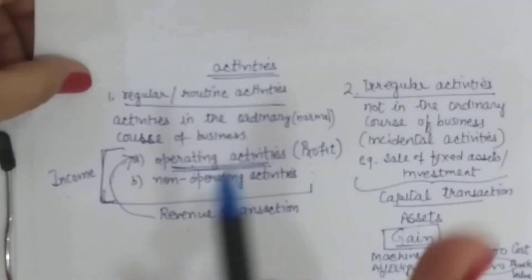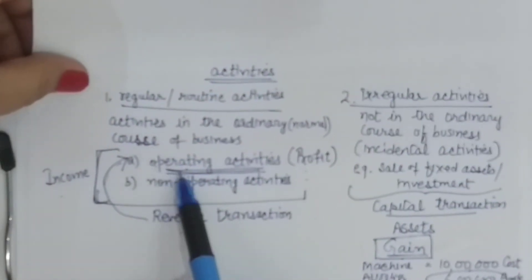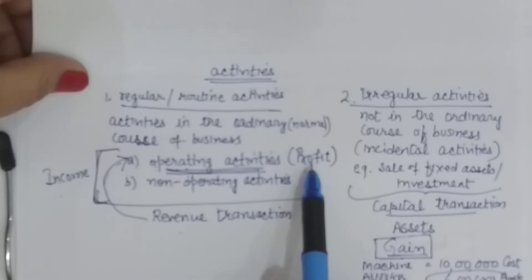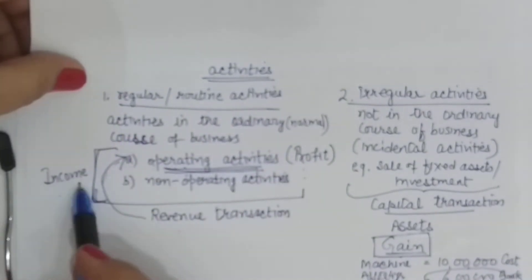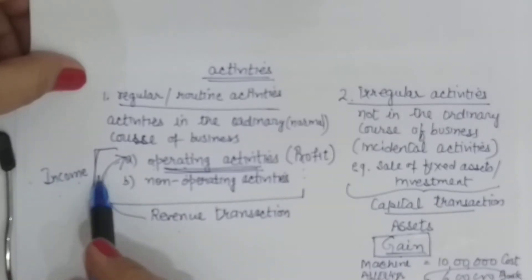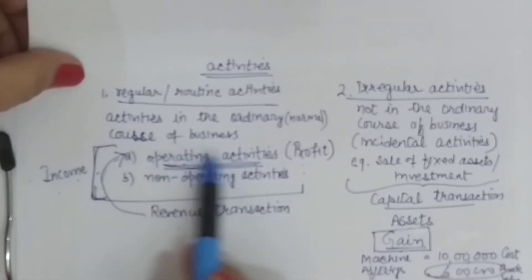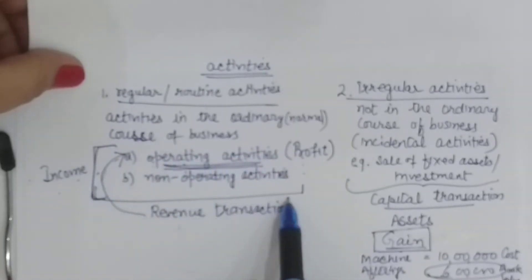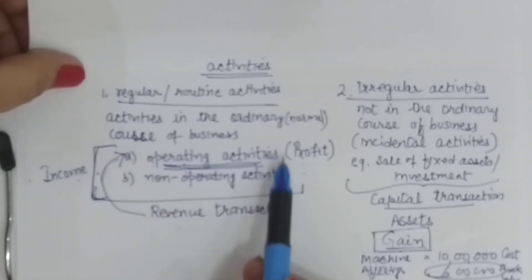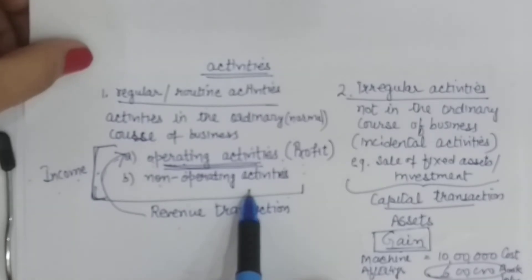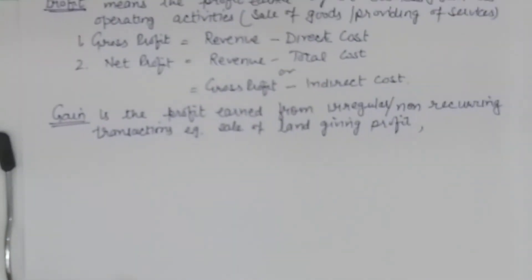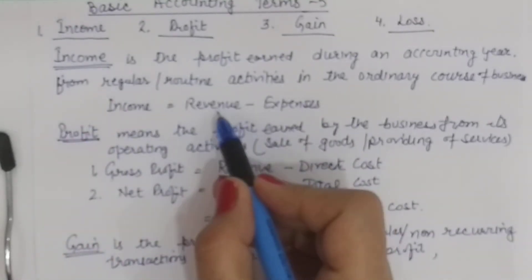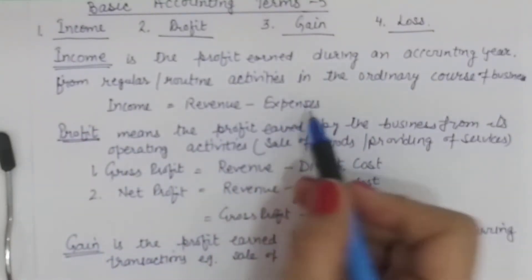Yahan routine activities mein do terms use hoti hain. Jo operating activities ka profit hai, uske liye term profit hi use hoti hai. Whereas jo income hai, woh umbrella term hai. Income is the profit generated in an accounting year from all routine activities. So ismein aapki operating profit bhi aayegi aur non-operating profit bhi aayegi. So your interest income, rental income will also be a part of your income. Income is overall revenue minus overall expenses.